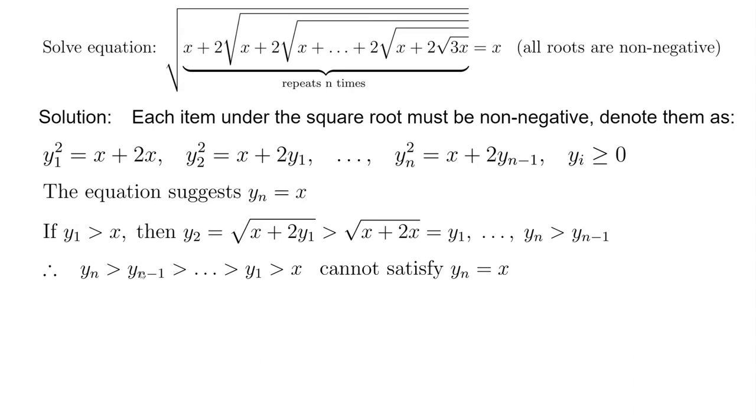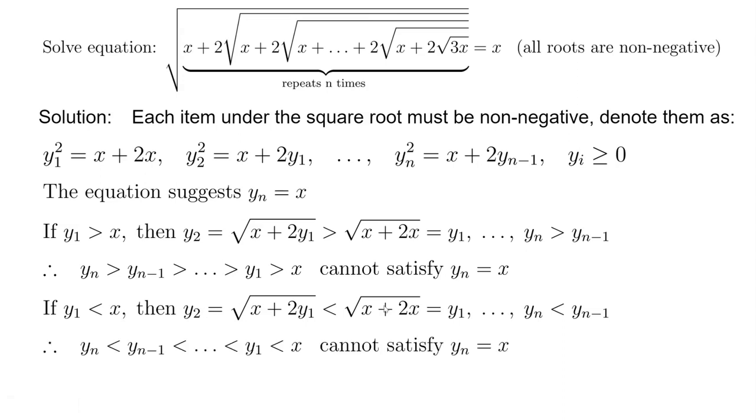Similarly, we can do the other way around. If y1 is less than x, we can also prove all the way that yn is less than x, which cannot satisfy yn equals x. This gives us only one possibility that y1 equals x.